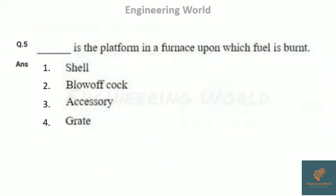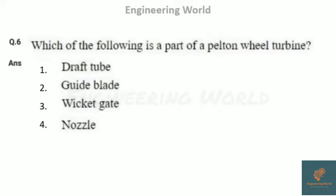Mild steel is also known as low carbon steel. The next question: what is the platform in a furnace upon which fuel is burned? Options are shell, blow-off cock, accessory, and grate. The answer is grate — the grate is the platform in a furnace upon which fuel is burnt.